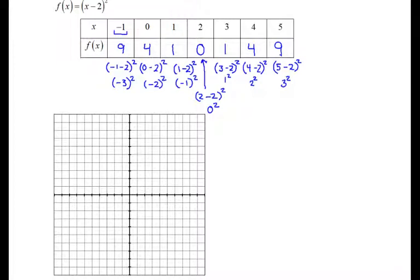Negative 1, 9, zero 4, 1, 1, 2, 0, 3, 1, 4, 4, and 5 and 9. So we again see our parabola. Let's go ahead and connect those. And this time, if we look at the graph qualitatively and try to describe how this changed from y equals x squared, we can see that the graph is shifted right 2 units.